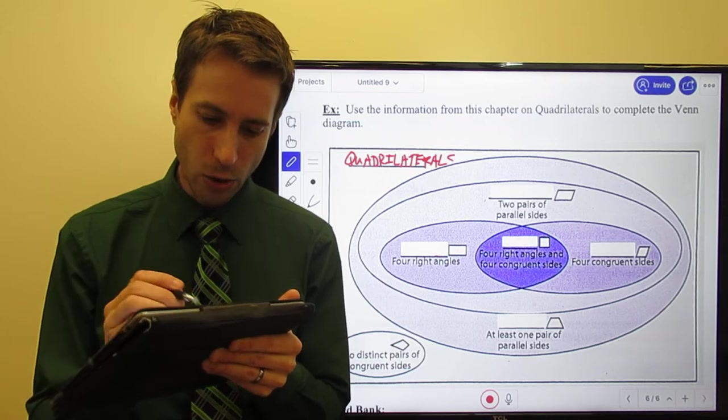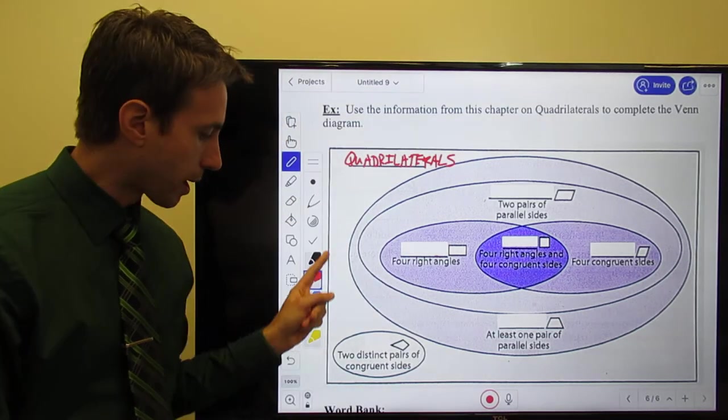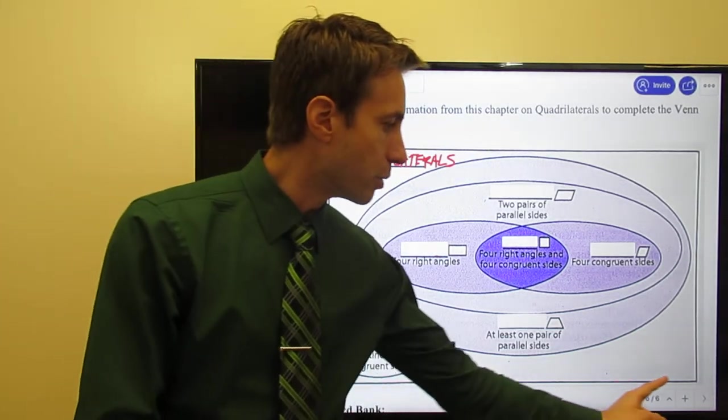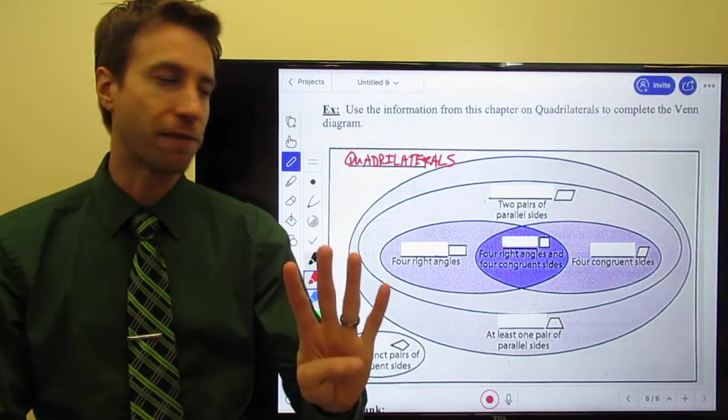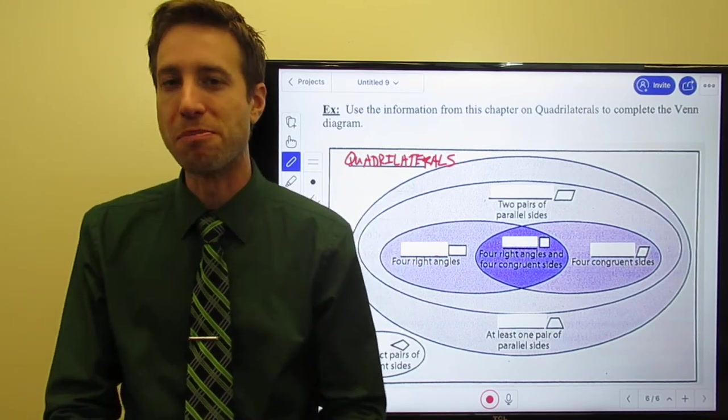All about quadrilaterals, right? So this box is my universe. Everything inside my universe is a four-sided figure, right? That's what quadrilateral means, four-sided figures.